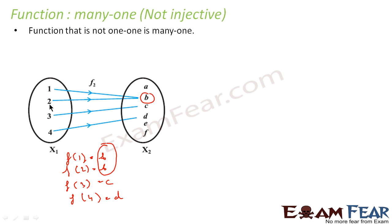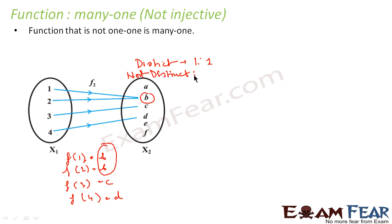In the case of a one-one function, the outputs are all distinct. For a many-one function, the outputs are not distinct. So there are two kinds of functions: one-one, where one input has one distinct output, and many-one, where many inputs share the same output.